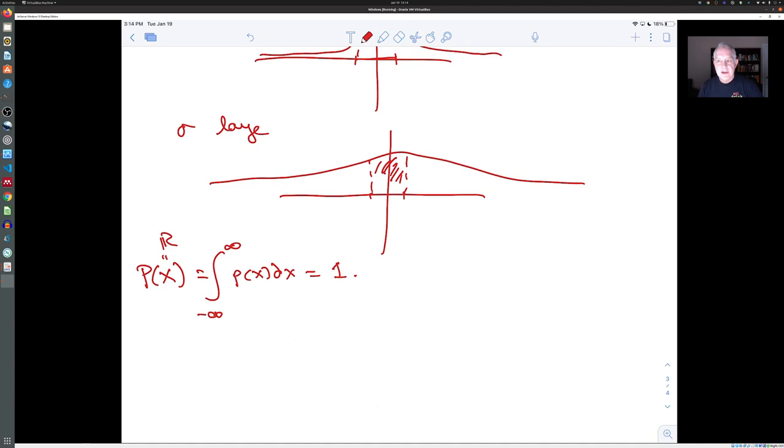So that's our very basic look at discrete and continuous probability. And we're going to move on from here to talk about some other features of this theory.